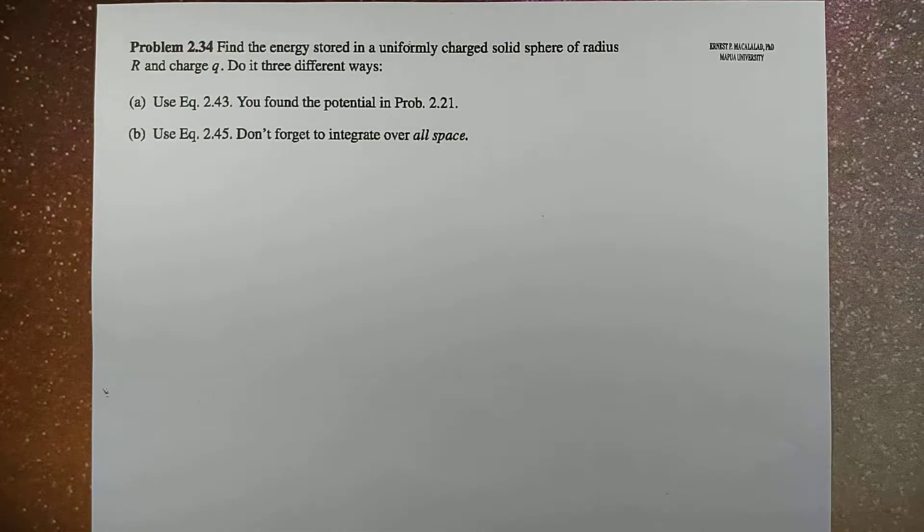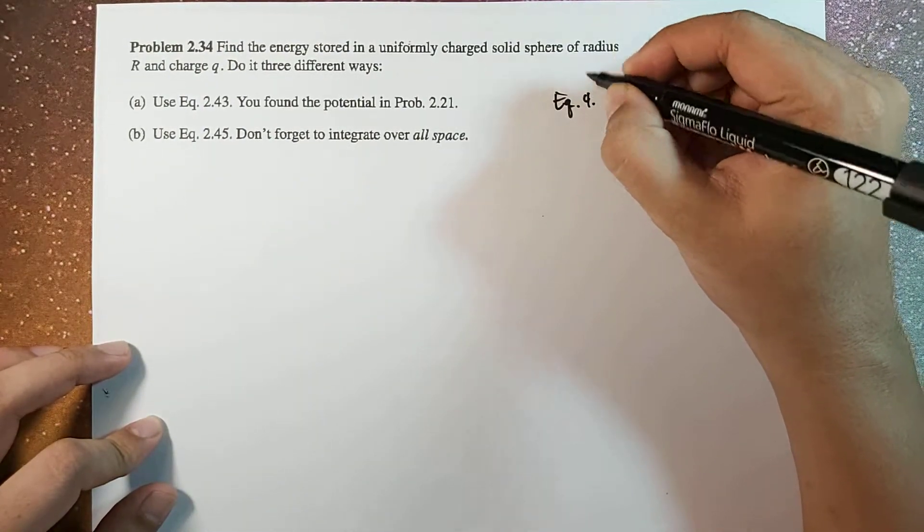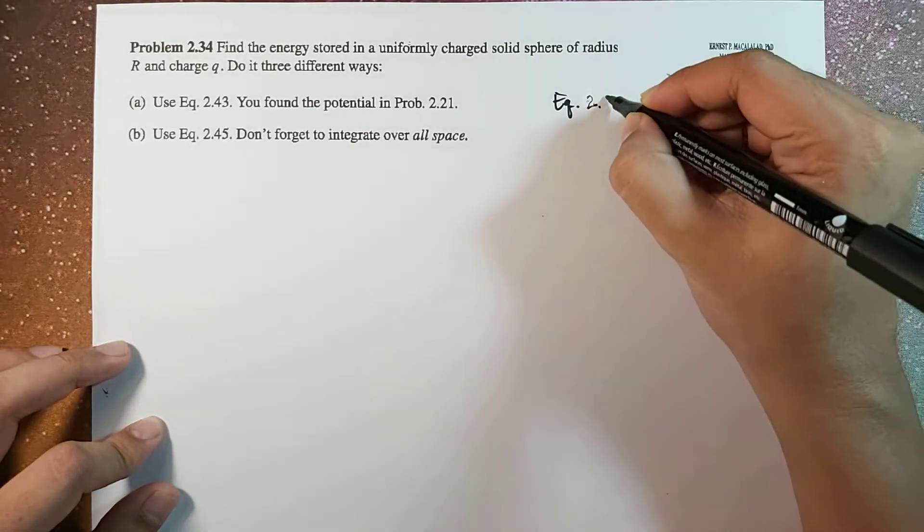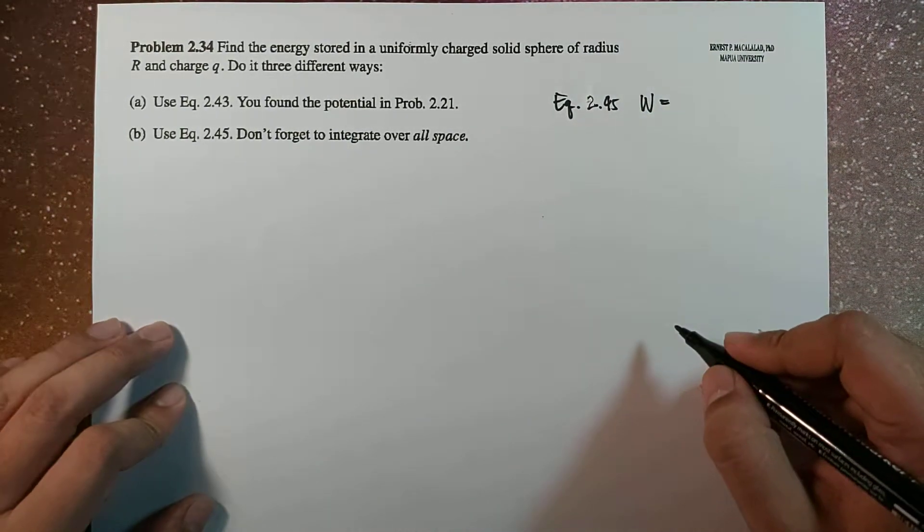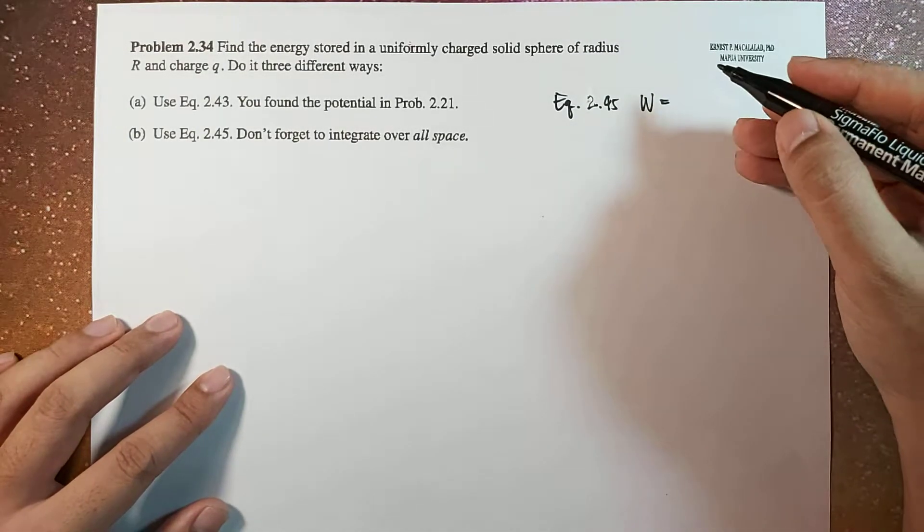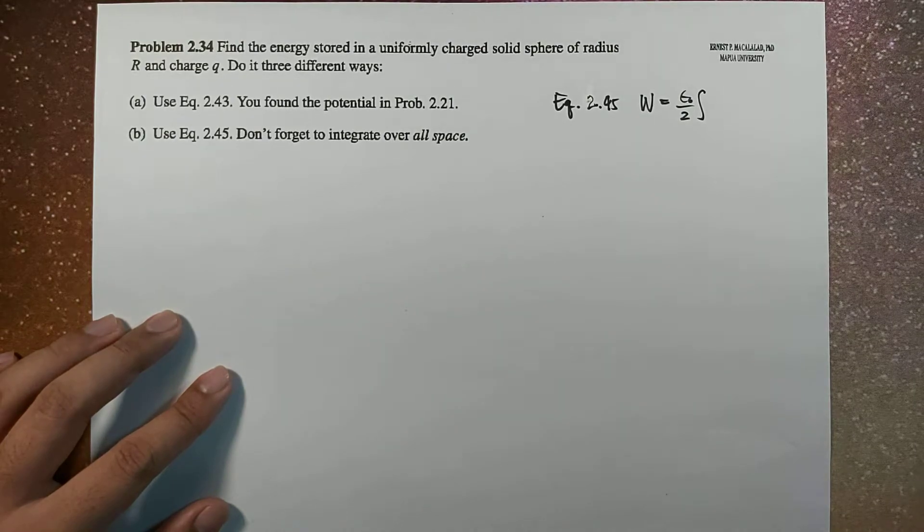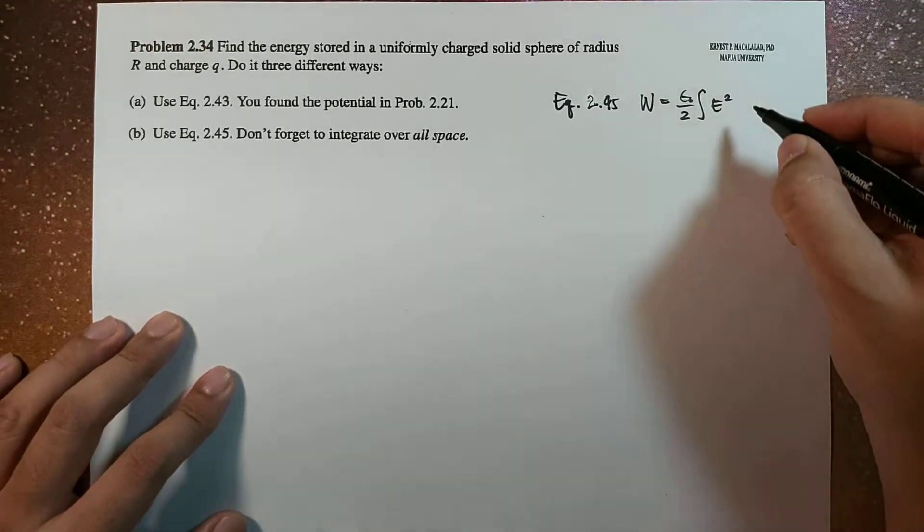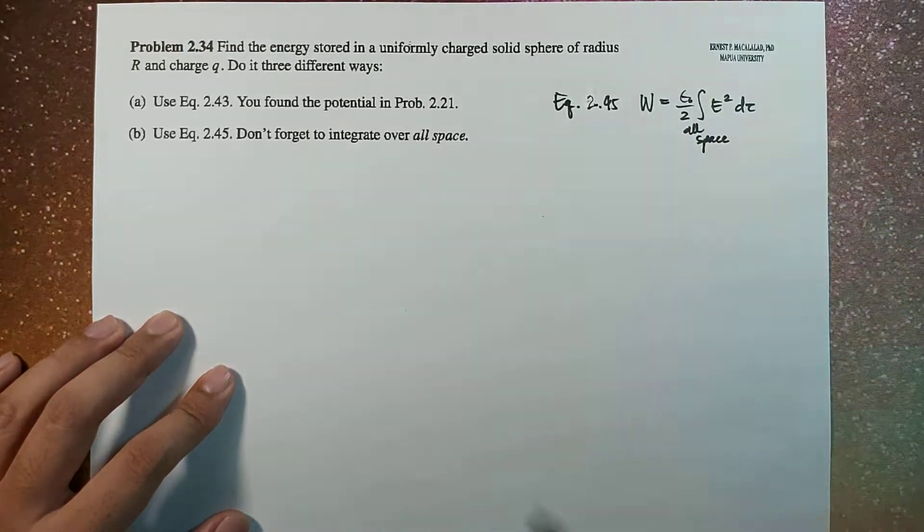So what is equation 2.45? Equation 2.45 is given by W, the energy stored, and it should be equal to epsilon naught over 2 times the integral of magnitude of the electric field squared d tau. And this integral is done for all space.